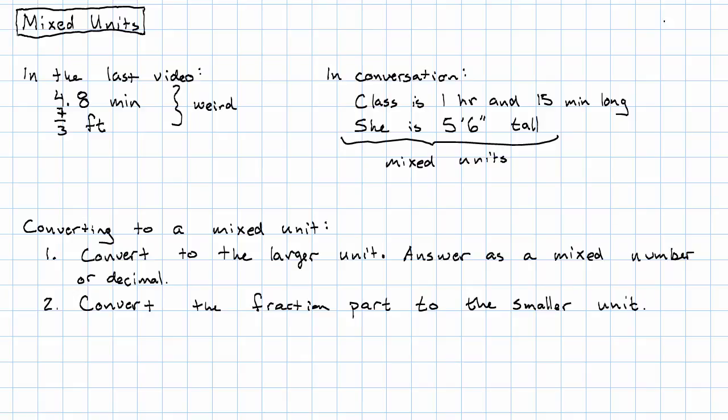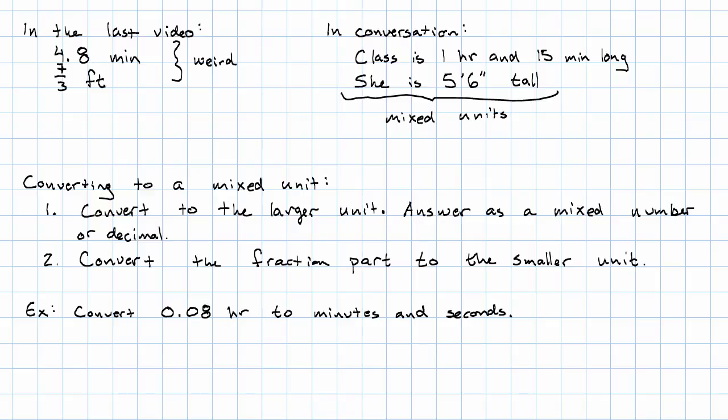So let's see some examples. Let's say we started with 0.08 hours, and we wanted to convert to minutes and seconds. Well, we've already done step 1 here. 0.08 hours is 4.8 minutes. Notice, minutes are larger than seconds, so minutes are the larger unit here.